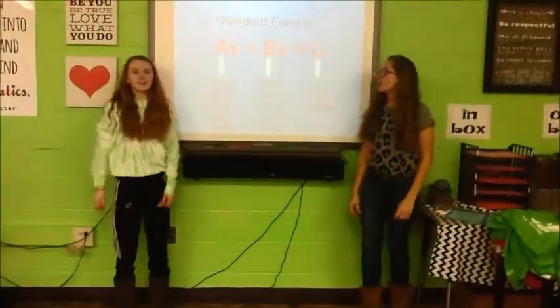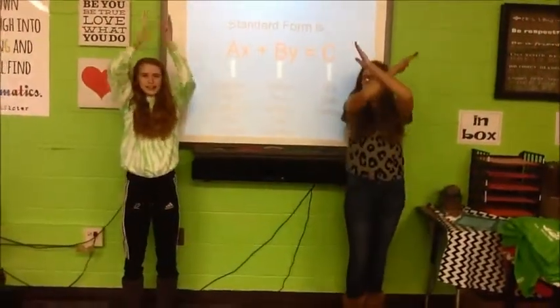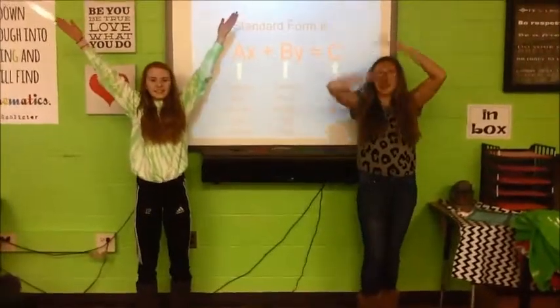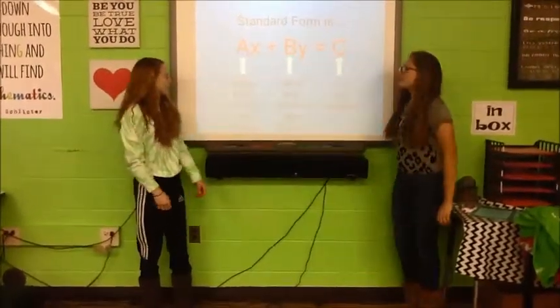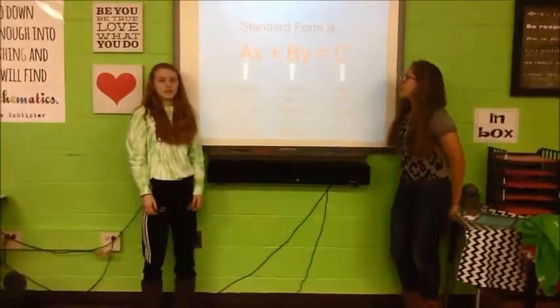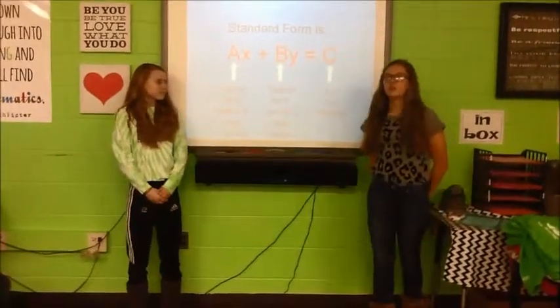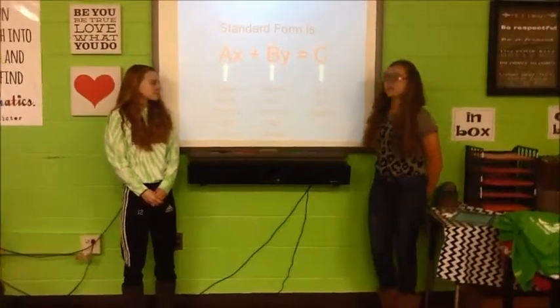Standard form is AX plus BY equals C. A cannot be zero and it is a real number. B cannot be zero and it is also a real number. And C is a real number.